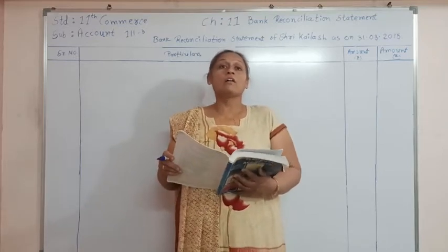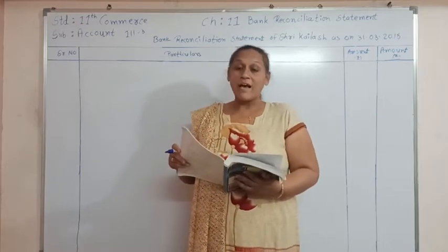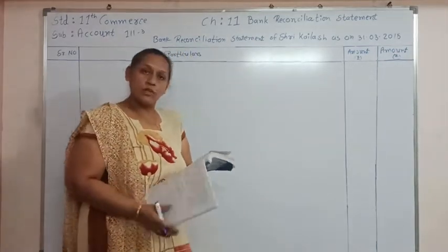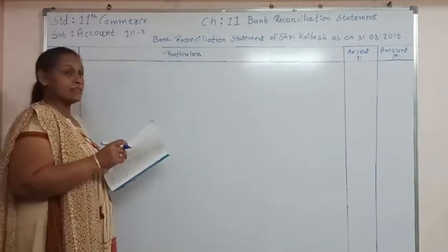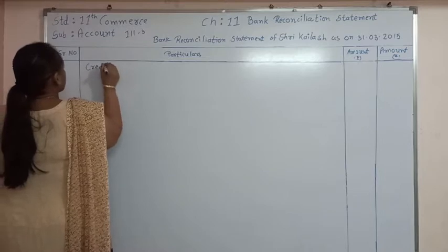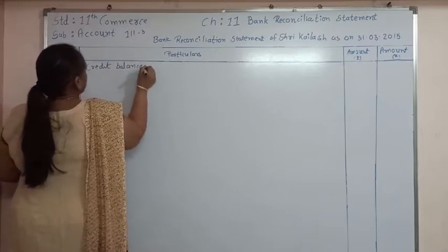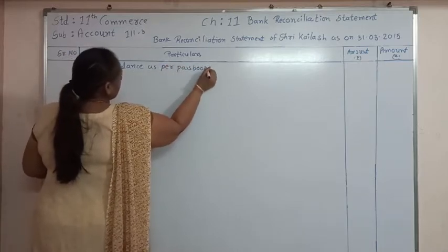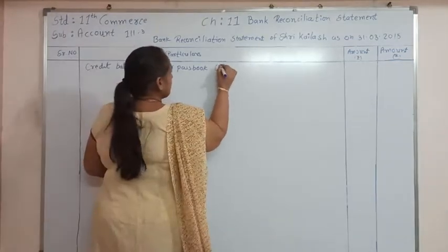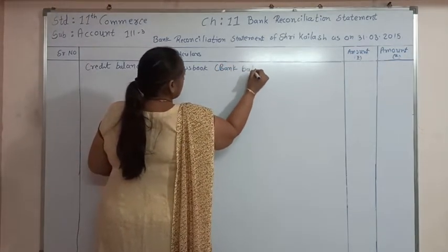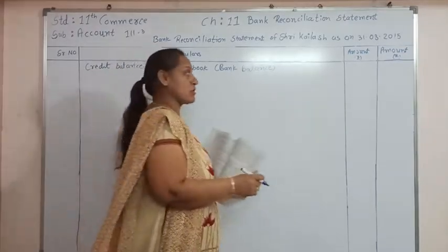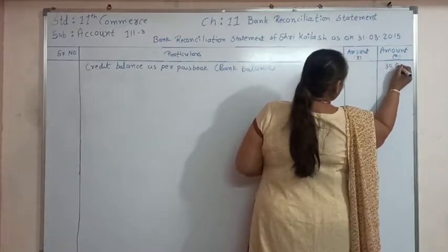Here it is given to us that the balance as per passbook is a credit balance, which means we have to start from the passbook. So let's start with credit balance as per passbook, also called bank balance, which is rupees 30,000.